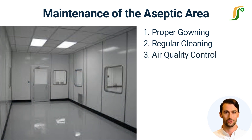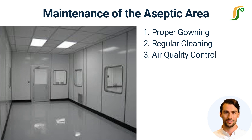Air quality control is another aspect. Air is the most important part of the sterile manufacturing area. HEPA filters are used to filter the contaminants from the air entering the sterile area. Low temperature and positive pressure can also help to minimize the risk of contamination.